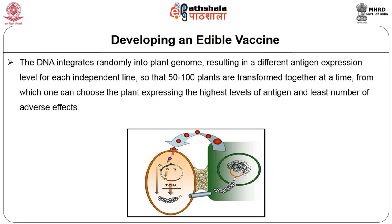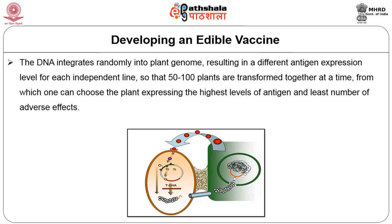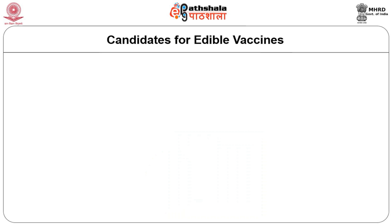The DNA from the plasmid integrates randomly into the plant genome, resulting in different antigen expression levels for each independent line. Therefore, 50 to 100 plants are transformed together at a time, from which one can choose the plant expressing high levels of vaccine antigen with the fewest adverse effects. The resultant edible plant vaccine can then be utilized for further immunological studies.